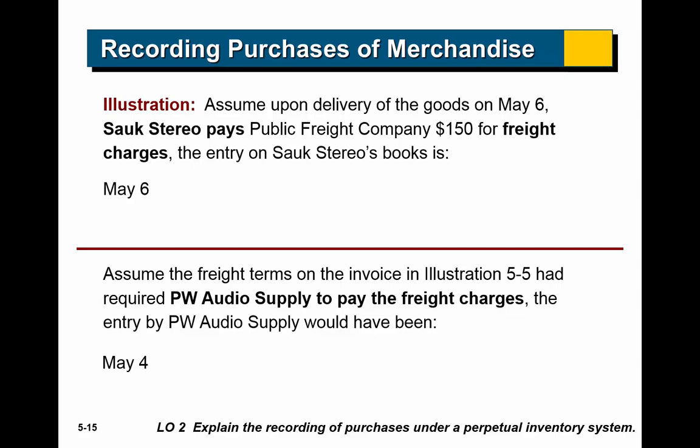Assuming FOB Shipping Point: on May 6th, Sock Stereo pays the freight company $150 for freight charges. We don't expense that to the current period; instead, we include it as part of inventory cost. All costs of purchasing merchandise and getting it ready to sell are wrapped into inventory cost. So we increase inventory by $150 and decrease cash by $150 — remember, inventory is an asset account. If it were FOB Destination, then PW Audio Supply pays the freight charges, so PW Audio would record freight costs of $150 and cash of $150. It matters who's paying, because that's whose books it gets recorded in.